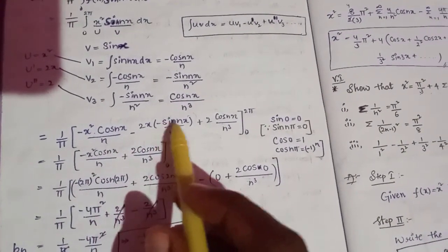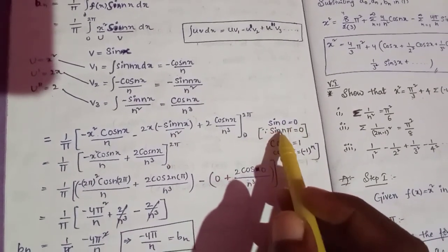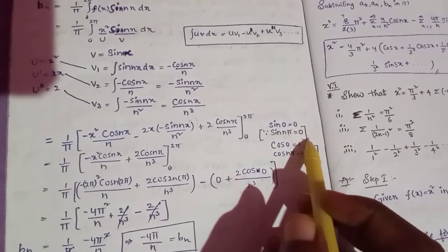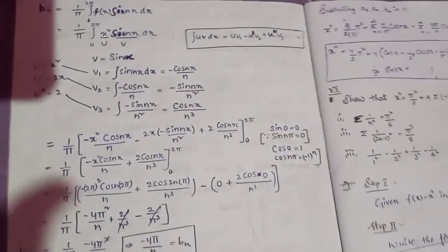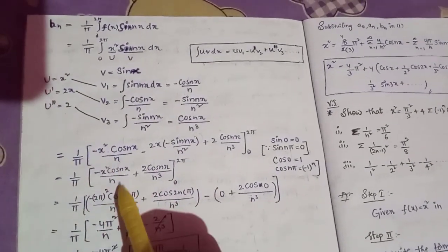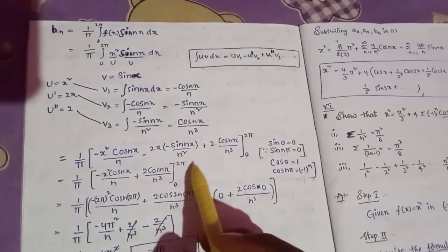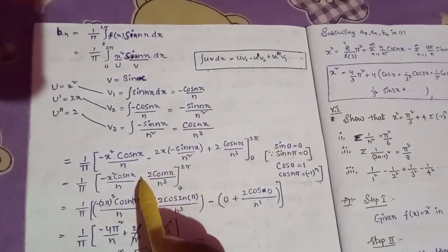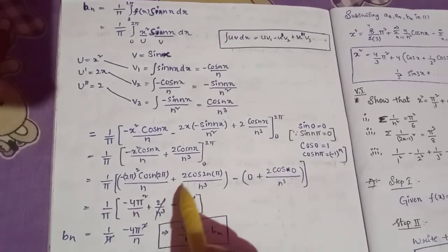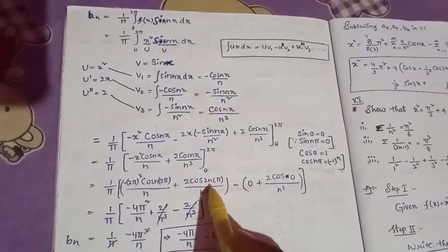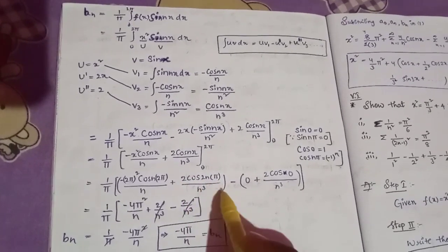Evaluating at the limits: sin(nx) at x = 2π gives sin(2nπ) = 0, and sin(nπ) = 0. So the sin terms vanish. At x = 2π: minus (2π)² cos(2nπ)/n plus 2 cos(2nπ)/n³. At x = 0: minus 0 squared into cos(0)/n plus 2 cos(0)/n³, giving 2/n³. Since cos(2nπ) = 1 and cos(0) = 1.